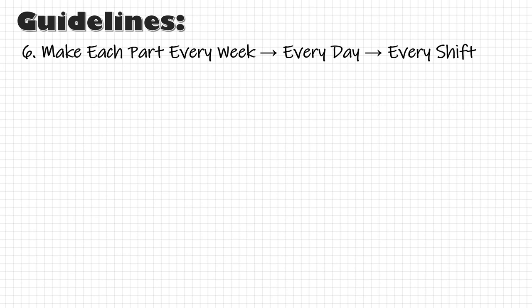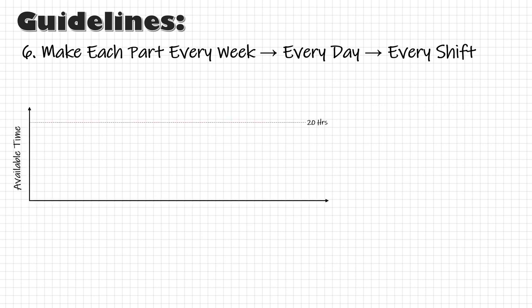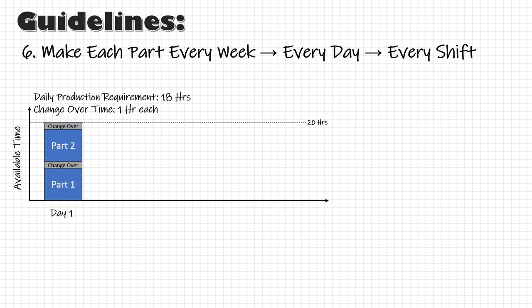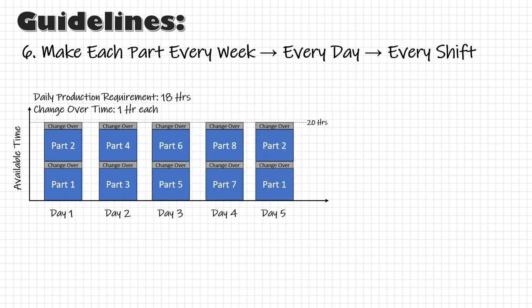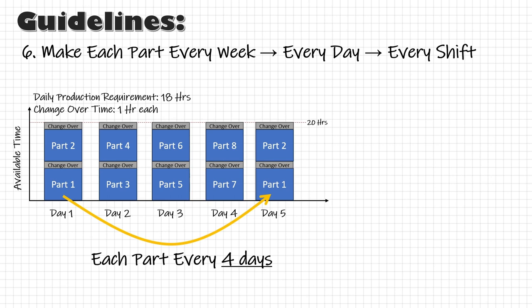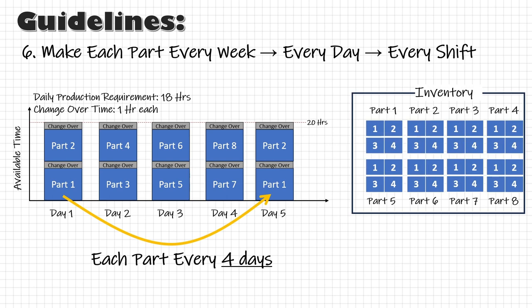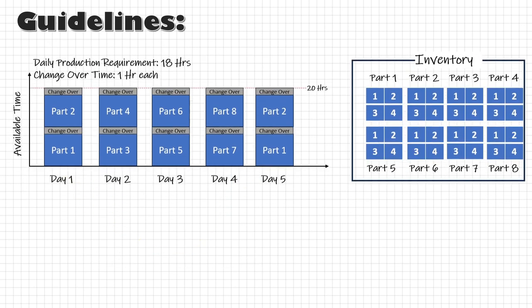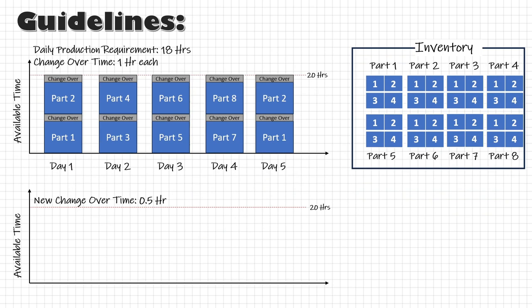This can be done by reducing changeover time. For example, if we have 20 hours available per day and it takes 18 hours to run the daily requirement, we have 2 hours available for changeover. If the changeover time is 1 hour, we can do 2 changeovers per day, meaning only 2 types of parts can be produced each day. With 8 different part types, the next turn for any part comes after 4 days — so ideally we need at least 4 days of inventory for each model.